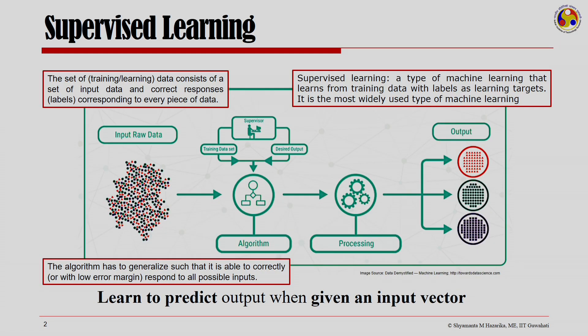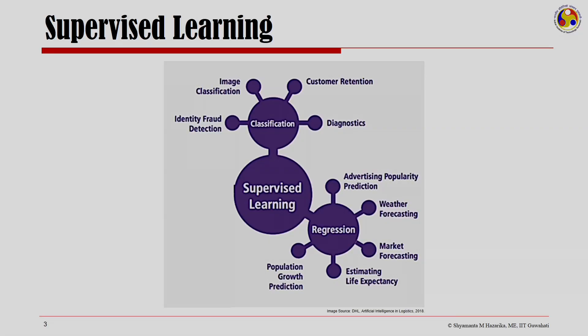Supervised learning, as we have discussed in our previous lecture, is about learning to predict an output when we are given an input vector. This is learning from training data with labels as learning targets. The algorithm has to generalize such that it is able to correctly, or with very low error margin, respond to all possible inputs. As discussed previously, supervised learning can be categorized as classification and regression.